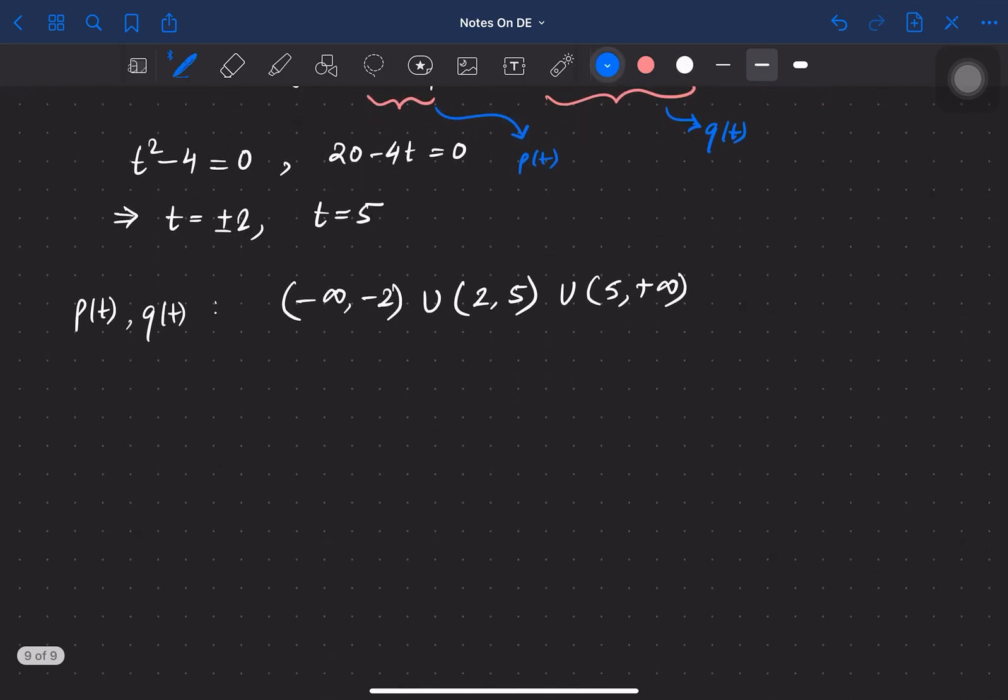one can see that the value 4 lies in this interval (2, 5). So we can say that for t ∈ (2, 5), the given differential equation or given IVP has a unique solution.